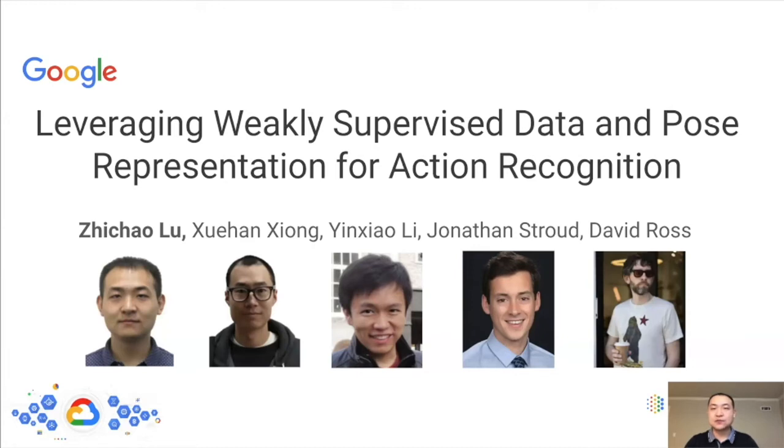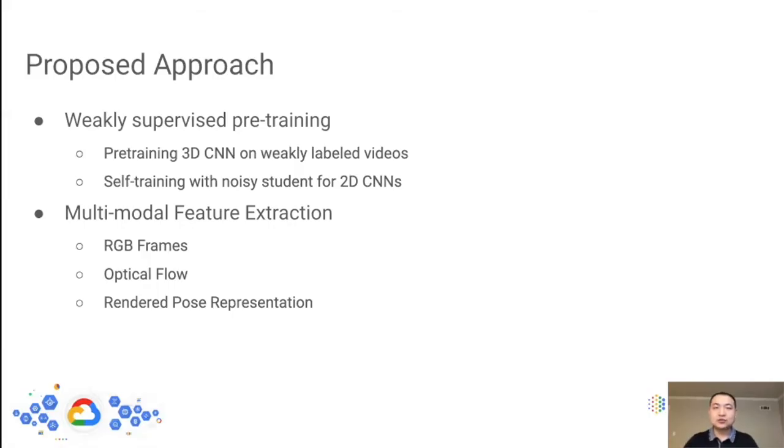Hello, everyone. I'm Zixiao Lu from Google. I will talk about our winner solution to the Kinetics Task in ActivityNet Challenge 2020. This is a team effort with my amazing colleagues, Xuehan Xiong, Yinxiao Li, Jonathan Stroud, and David Ross. I want to highlight two key innovations in our approach. One is to pre-train our 2D or 3D convolutional networks on large-scale extra data with little or no supervision. We will show that this is an effective way to improve the accuracy and the generalizability of the models. The other innovation is using multi-modal feature extraction, including a rendered pose representation, which offers complementary gains to the final performance.